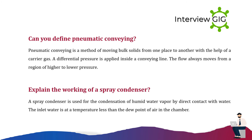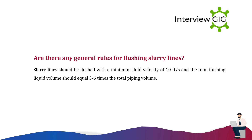Explain the working of a spray condenser. A spray condenser is used for the condensation of humid water vapor by direct contact with water. The inlet water is at a temperature less than the dew point of the air in the chamber.